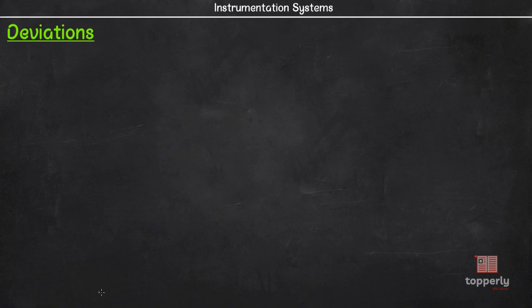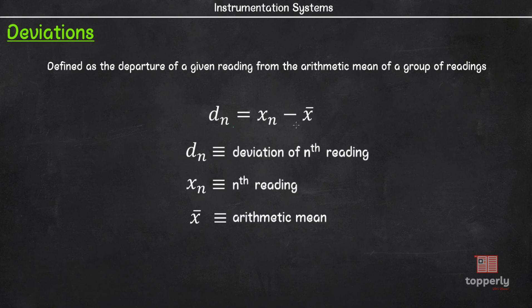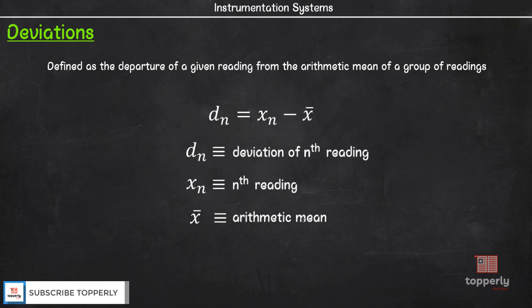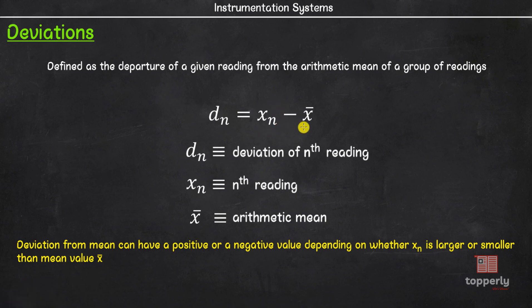Next, we have deviations. Deviation is defined as the departure of a given reading from the arithmetic mean of a group of readings. The deviation of the nth reading from the mean can be expressed as dn = xn − x̄, where dn is the deviation of the nth reading, xn is the nth reading and x̄ is the arithmetic mean. Note that deviation from mean may have a positive or negative value depending on whether xn is greater than or smaller than x̄.